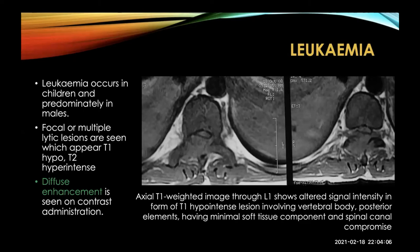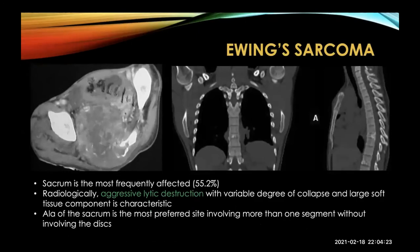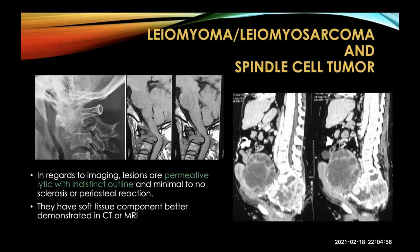Chordoma is the second most common primary malignant spinal tumor, occurring in the sacrum as an aggressive lytic lesion causing vertebral body destruction and collapse. Ewing's sarcoma is very rarely seen in the spine but can occur, mostly in the lumbar area; if followed over one to two months you can see it eroding the whole vertebral body and arch. Leiomyoma or leiomyosarcoma and spindle cell tumors should also be kept in mind; these are permeative lesions with indistinct outlines that are better demonstrated on CT than MRI.